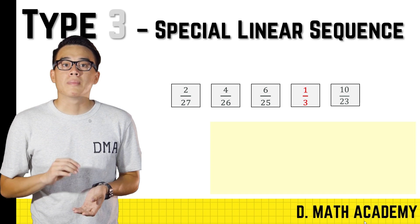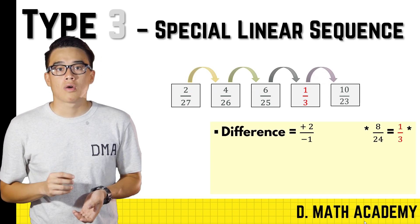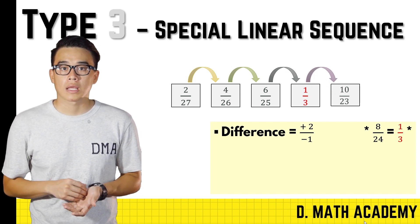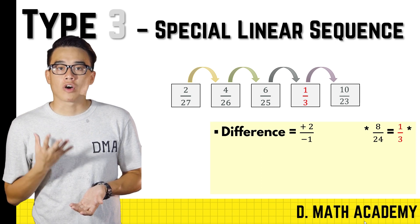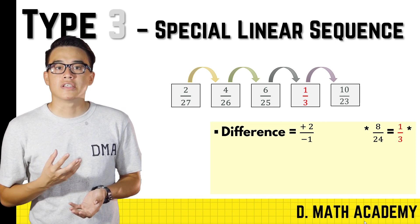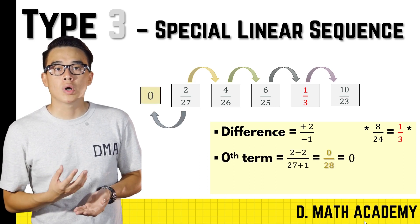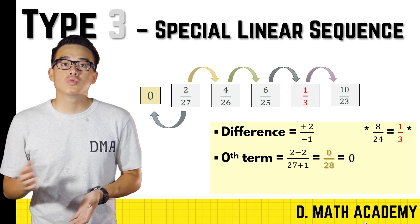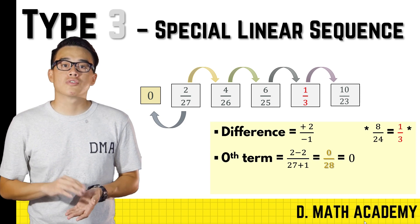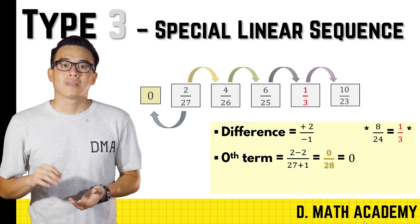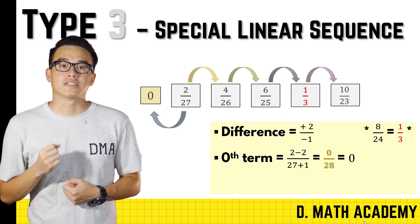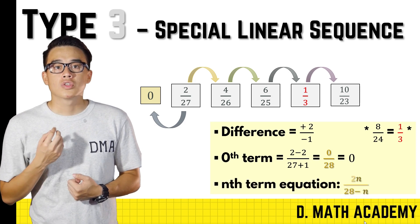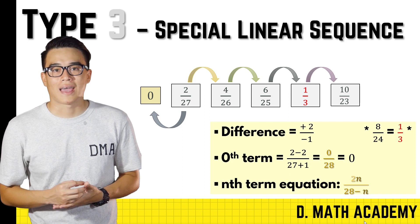The numerator increases by 2 each time, whereas for the denominator you subtract 1. With this information, I can derive the 0-term by taking 2 minus 2 and 27 plus 1, giving a 0-term of 0 over 28. Combining the differences and the 0-term, we construct the n-term sequence: 2n over (28 minus n).